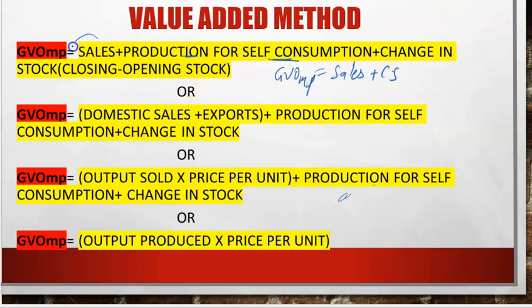Second variation: if Sales is not given but Domestic Sales is given, then to make it total Sales, we also have to add Exports. Because Sales includes sales within the country and exports. So if Sales is given, it is inclusive of exports. If Domestic Sales is given, add Exports to make it total Sales.